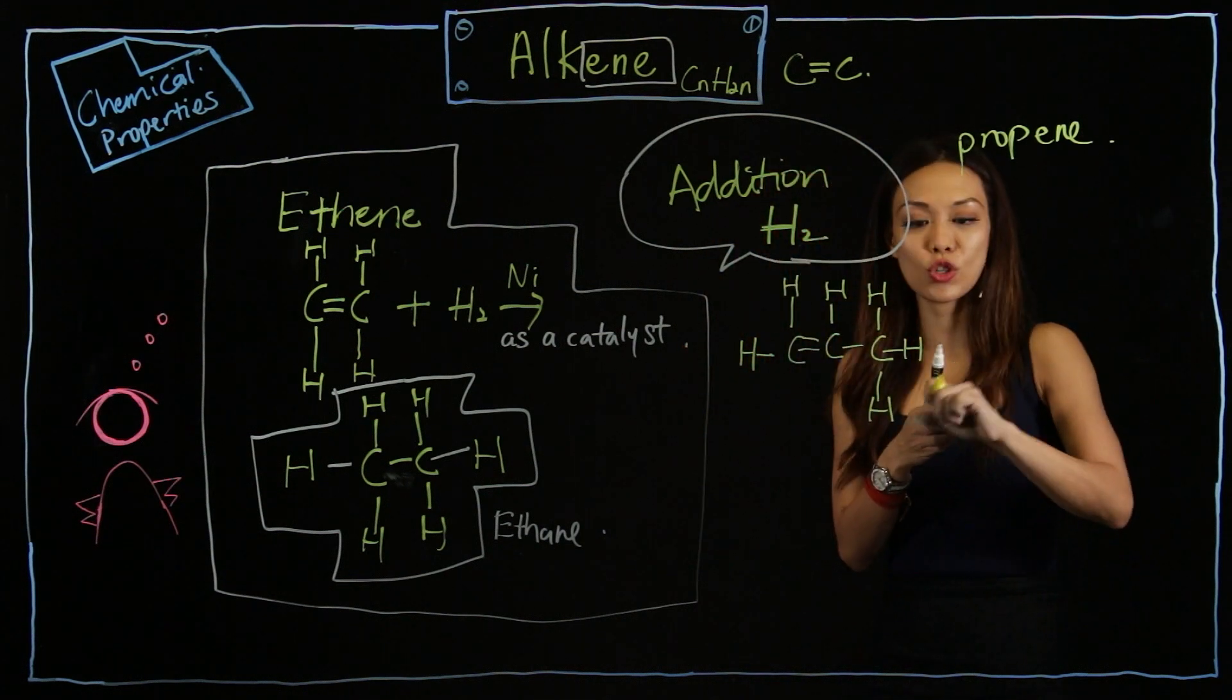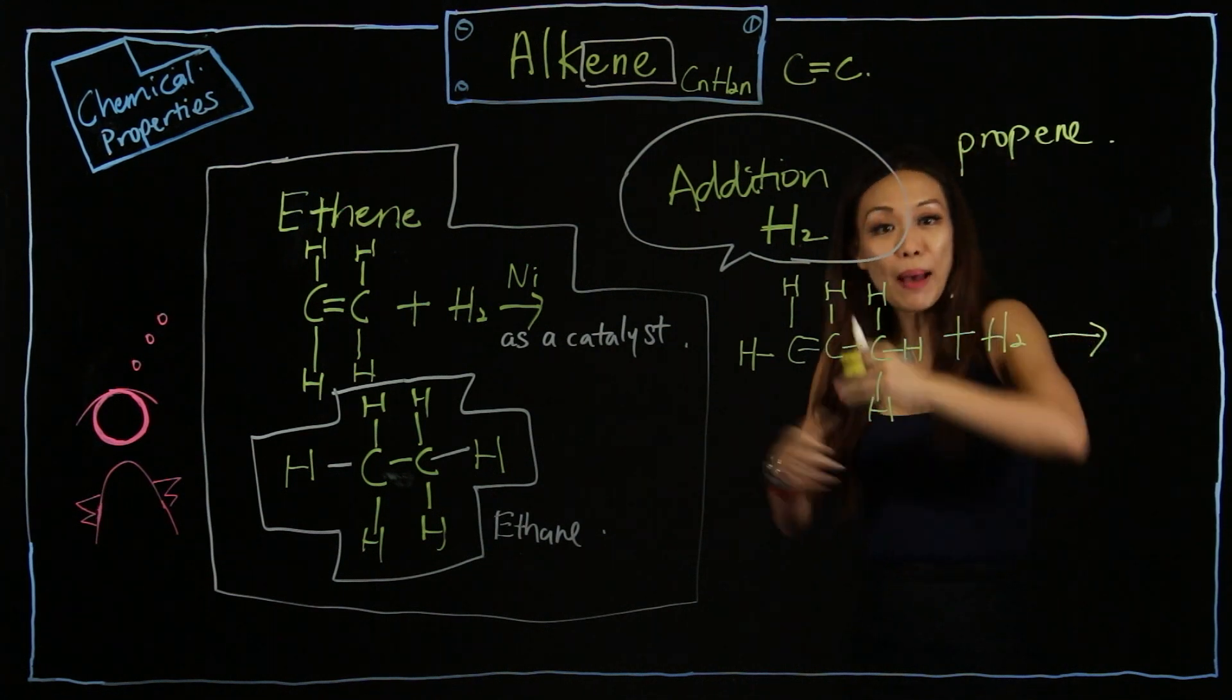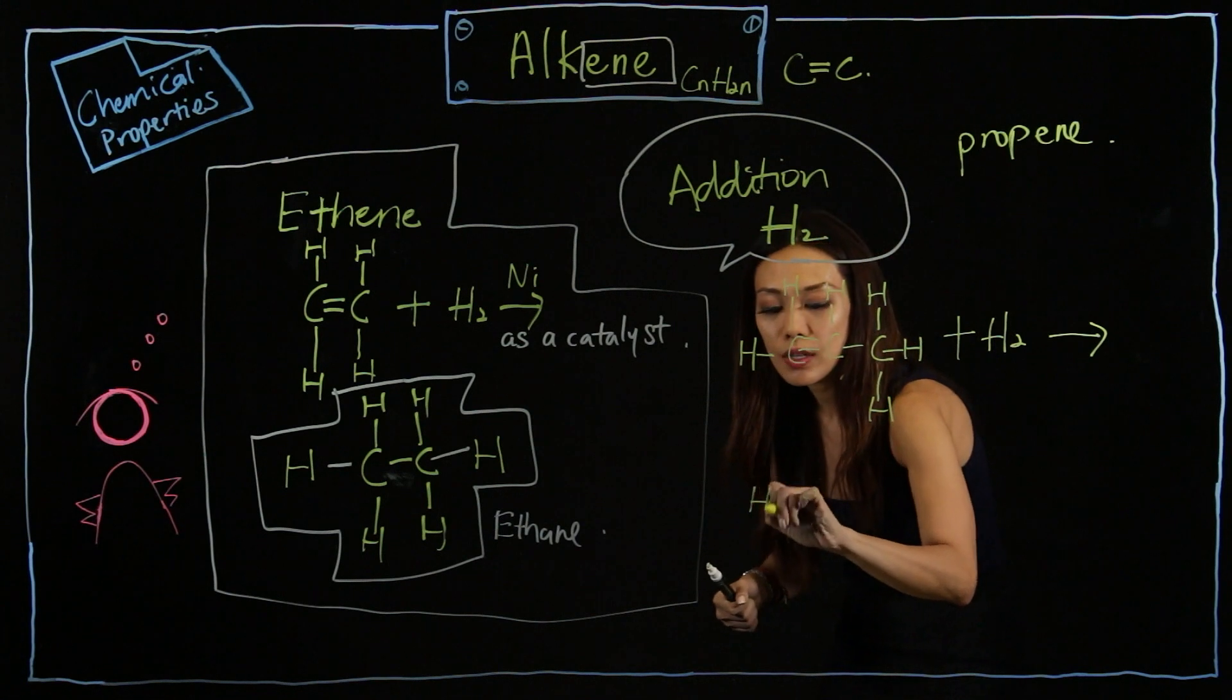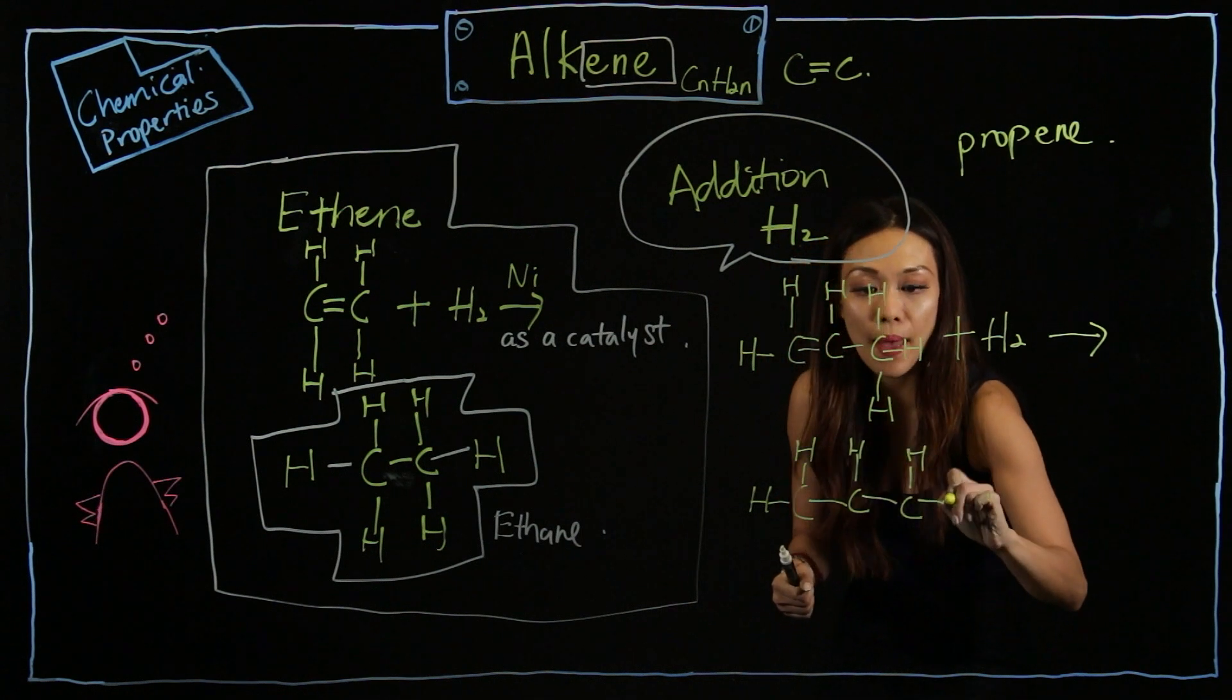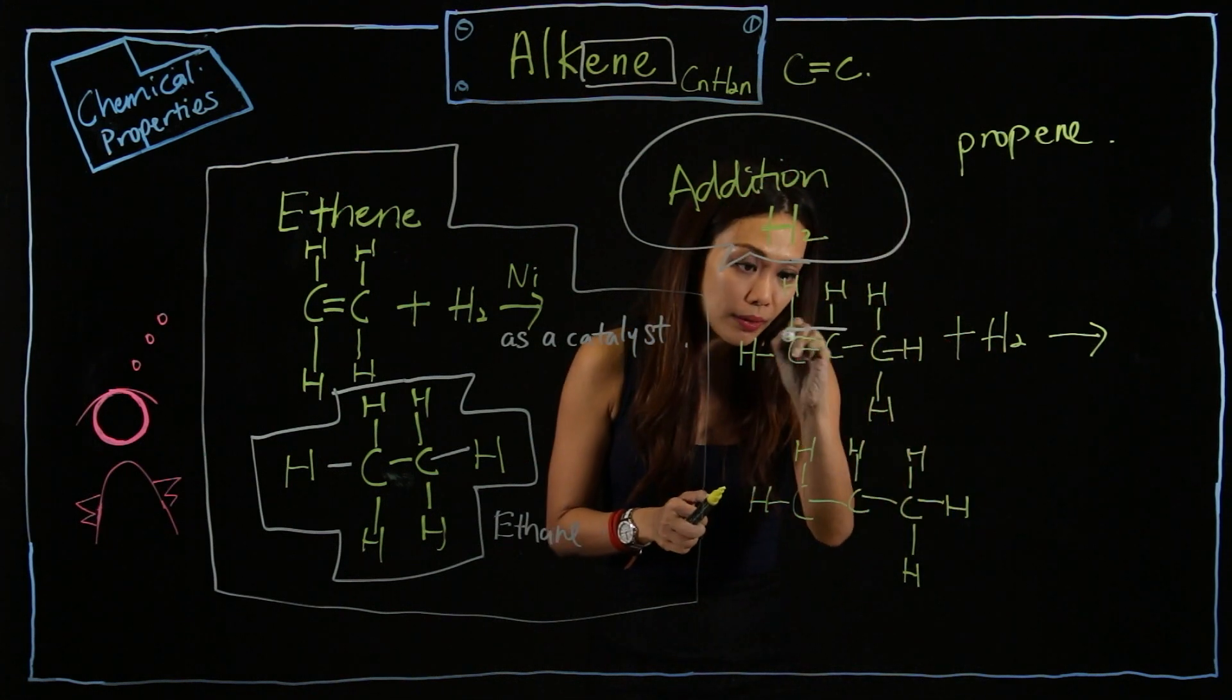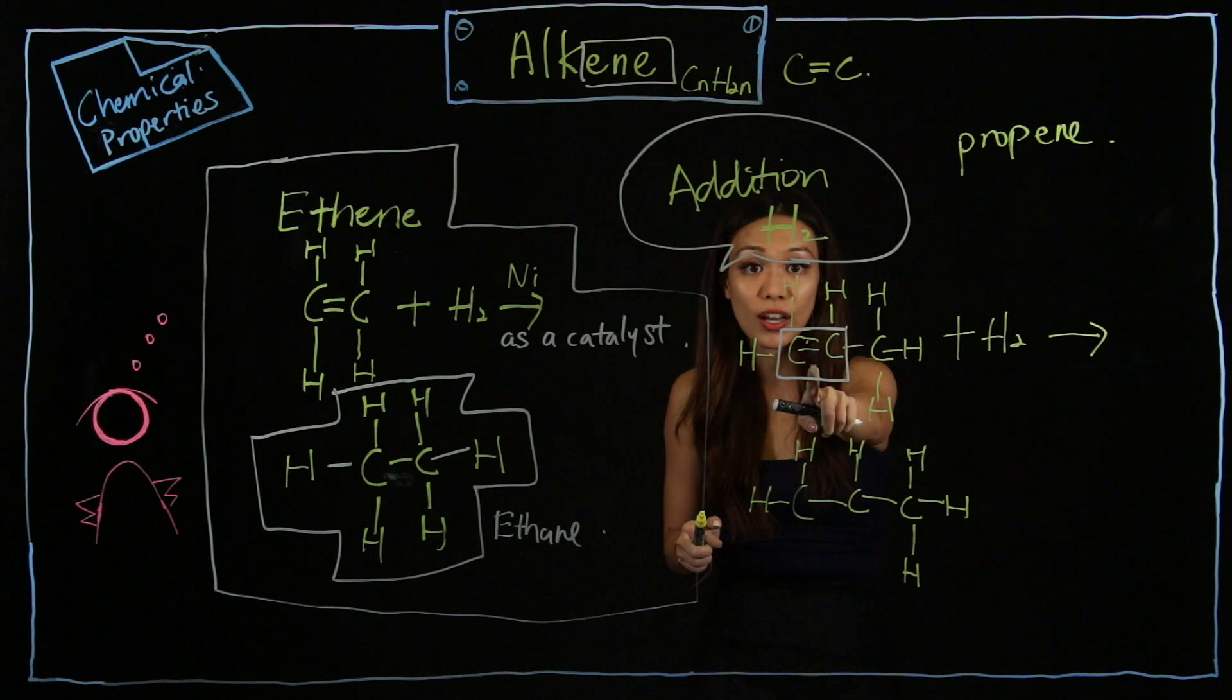So when I add H2, your double carbon bond will open up to become a single bond. You notice one thing as I draw - I will always focus my eyes on where my double bond is. My double bond is at this part, can you see? Okay, it's at this juncture.